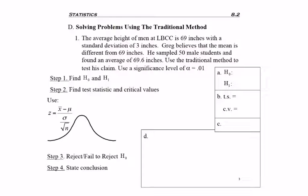Now that we've read the whole sentence and know what's going on, let's redissect it from the beginning. The average height of men is mu in this case because it's our population standard deviation. The average is 69 inches with a standard deviation sigma of 3 inches. Greg believes that the mean is different, not equal to 69 inches. He samples 50 male students, so 50 is n, our sample size. And he found an average of 69.6, which is x bar because it's the average based on the sample.